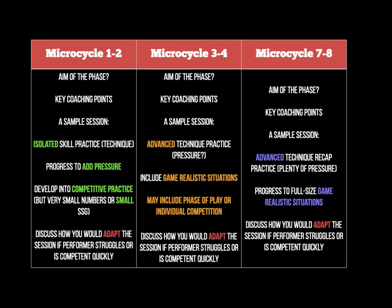In microcycle weeks 3 to 4, you'll cover the same elements — aim, coaching points, sample session — but this time I'm looking for advanced technique practice. You might start the session with some form of pressure: defenders already present, a timer, or physical pressure such as raising jump heights in equestrian. Then move to a more game-realistic situation — not a full game, but something like 7 v 7 in football, or a set play such as a phase of play from a sideline in basketball, working without defenders then adding them in gradually.